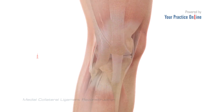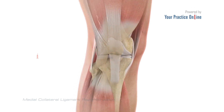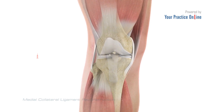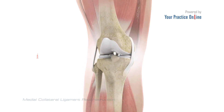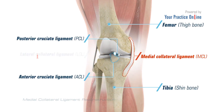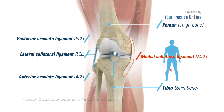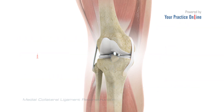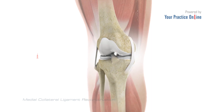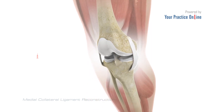The Medial Collateral Ligament is one of the four major ligaments of the knee that connects the femur to the tibia and is present on the inside of the knee joint. This ligament helps stabilize the knee.